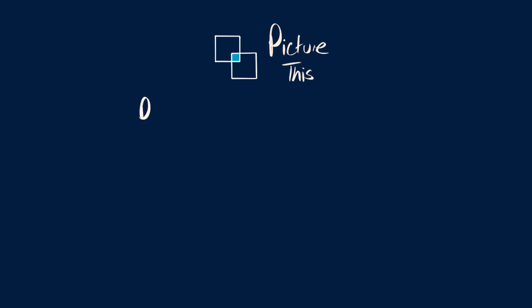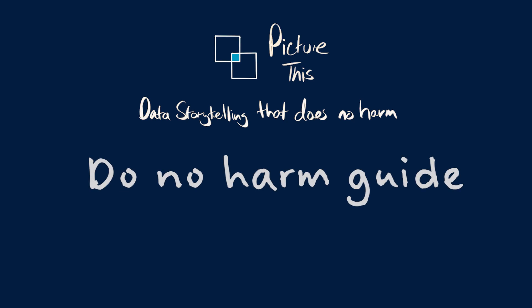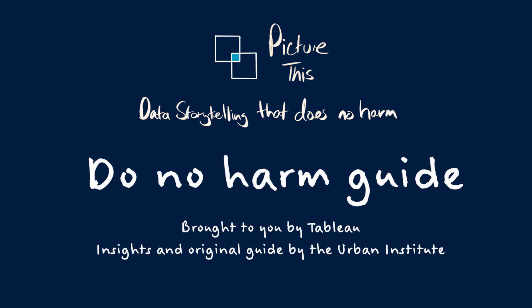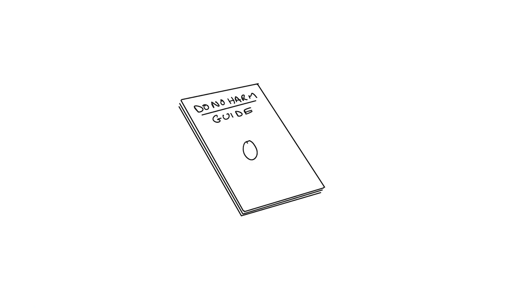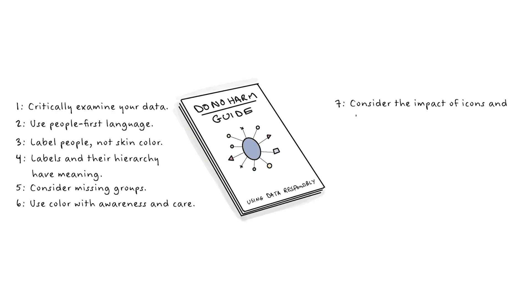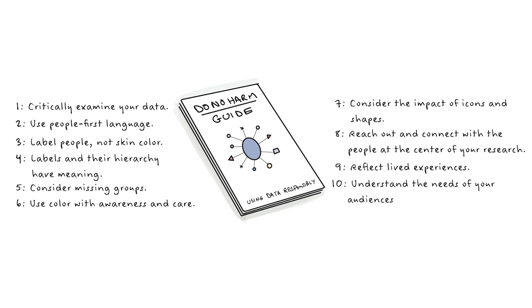Picture this. Doing good data means doing no harm. As data storytellers in a data-driven world, we have a unique set of responsibilities. To ensure that our analyses are trustworthy, we need to hold data up to close scrutiny. We need to ask hard questions as we gather information and apply rigour in our analyses. The Do No Harm Guide from the Urban Institute addresses the responsibilities we all share in using data responsibly to further the cause of equity in our society. Let's take a deep dive into these 10 recommendations from the Do No Harm Guide and learn how to represent data through a more diverse, equitable and inclusive lens.